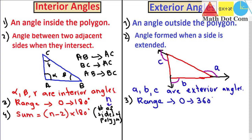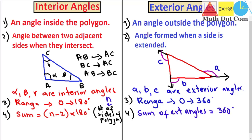For exterior angles, the sum of the exterior angles always equals 360 degrees, irrespective of the number of sides of the polygon.